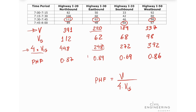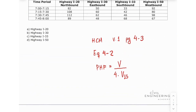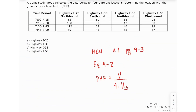The greatest peak hour factor is 0.89, and this is for highway I-30. Looking at our options, this is option B — highway I-30 has the greatest peak hour factor. This concludes the solution. I hope you learned a lot, and I'll see you later.